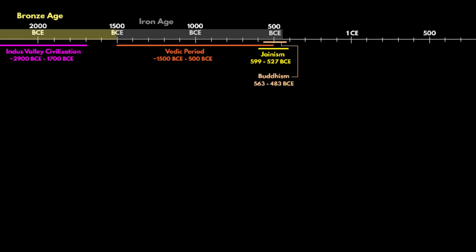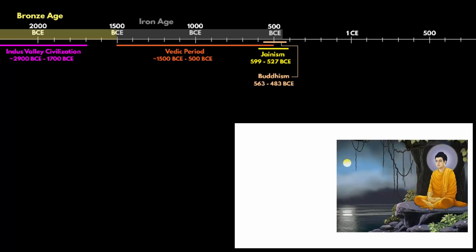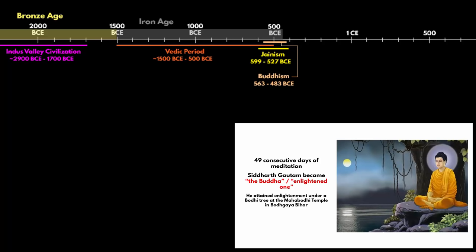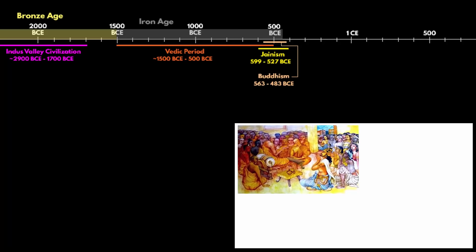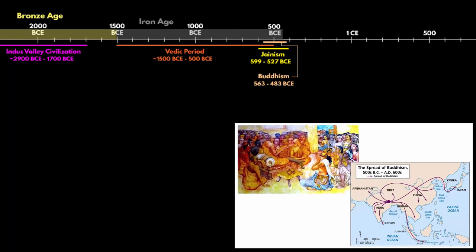From 563 to 483 BCE, Buddhism originated. It was founded by the sage Siddhartha Gautam, who was born in a wealthy family and then rejected his rich lifestyle for extreme self-discipline. After 49 consecutive days of meditation, Siddhartha Gautam became the Buddha or enlightened one. He attained enlightenment under a Bodhi tree at the Mahabodhi temple in Bodhgaya, Bihar. Born in 563 BCE, he made his public announcement at about 528 BCE and gained disciples who became Buddhist monks and travelled throughout Northern India. Buddhism remained a relatively minor school until the rule of Ashoka the Great of the Mauryan Empire, who embraced it and spread it throughout India and Southern, Eastern and Central Asia.